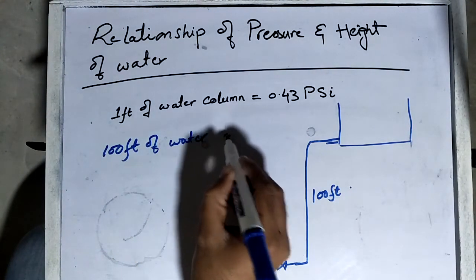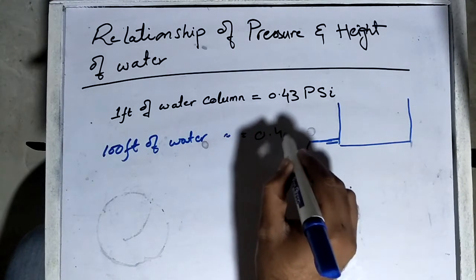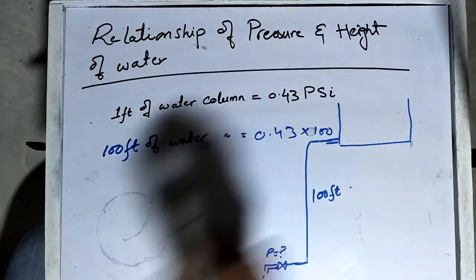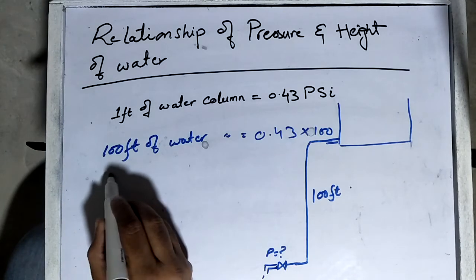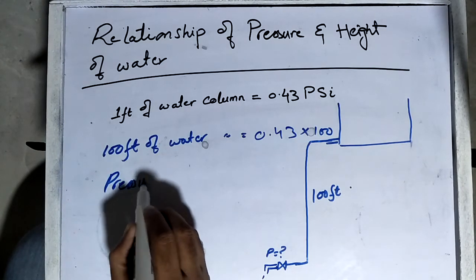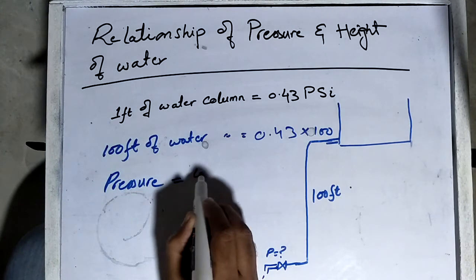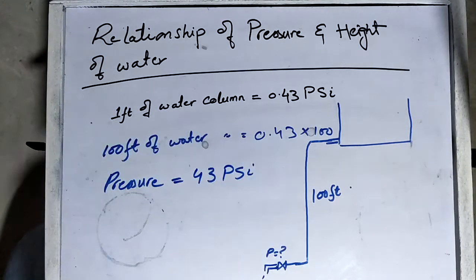...will exert 0.43 × 100. So pressure will be equal to 43 PSI. Or if we convert into bar...